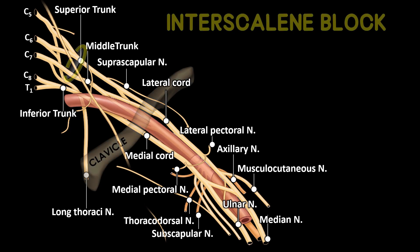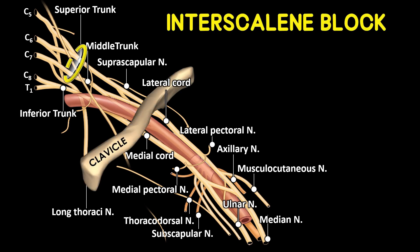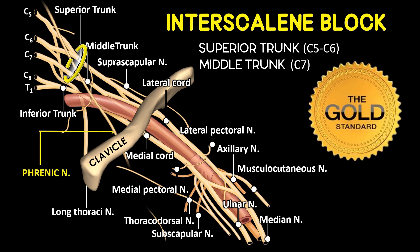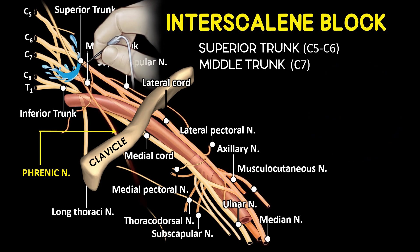An interscalene brachial plexus block is the most common regional anesthetic technique for shoulder surgery. It involves the injection of a local anesthetic agent into the interscalene groove — the space between the anterior and middle scalene muscles in the neck. This blocks specifically the superior and middle trunk from C5 to C7, inducing a sustained block of the suprascapular, axillary, subscapular, lateral pectoral, and musculocutaneous nerves, ensuring consistent success of the anesthetic technique.